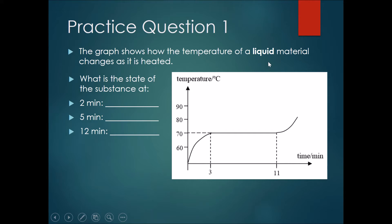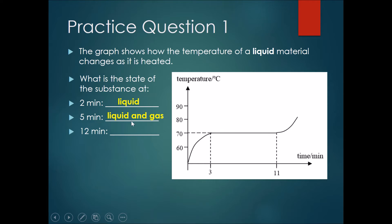The question told us it started off as a liquid material, therefore this part over here is purely liquid. From the third minute to the eleventh minute there is a horizontal straight line — at five minutes, it is in the process of changing state. Therefore anywhere along this horizontal straight line that is not three or eleven would be part liquid and part gas.